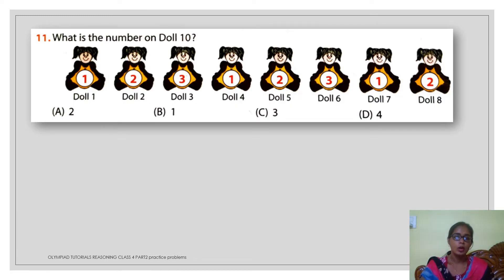In this question, what is the number of doll number 10? And as you can see in the picture, 8 dolls are shown. And there is a series in which you can see there is a repetition of the numbers 1, 2 and 3. Doll number 1 has the number 1, doll number 2 has 2 and 3 is having 3. But you can see the series is being repeated from doll number 4, 5, 6.